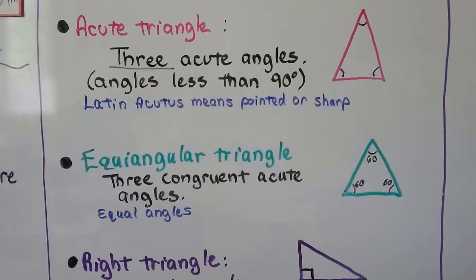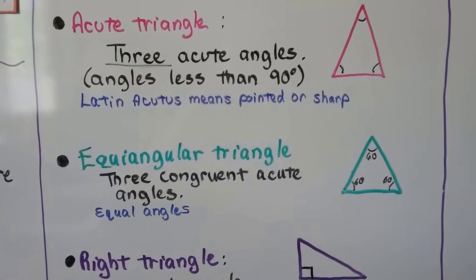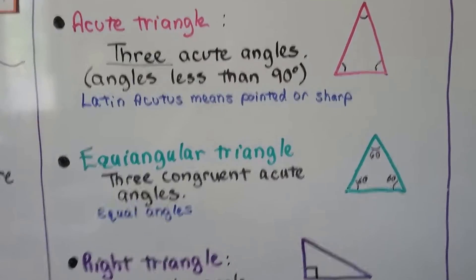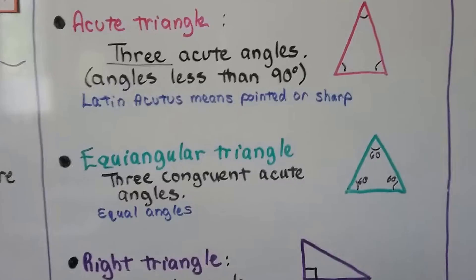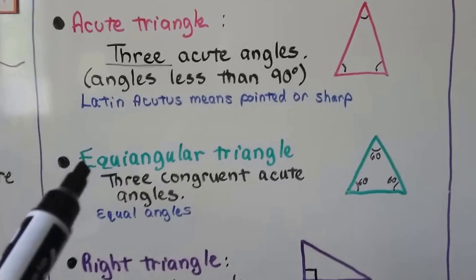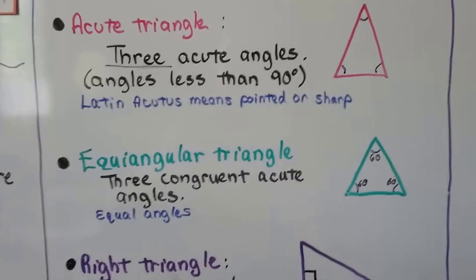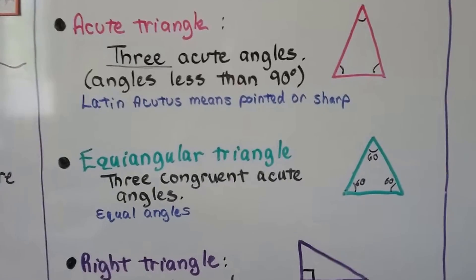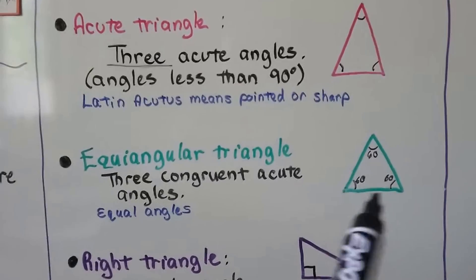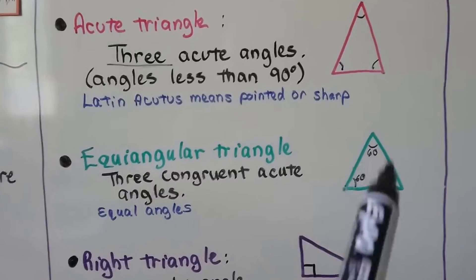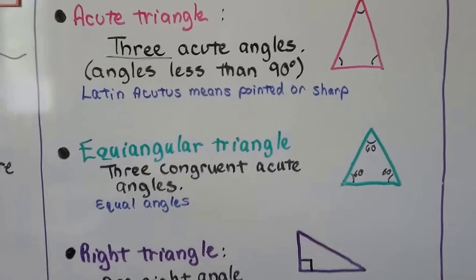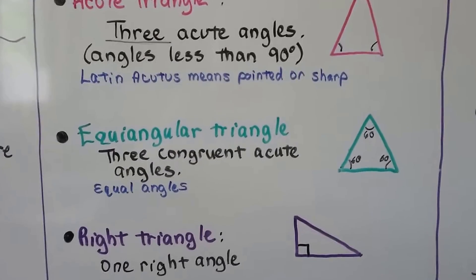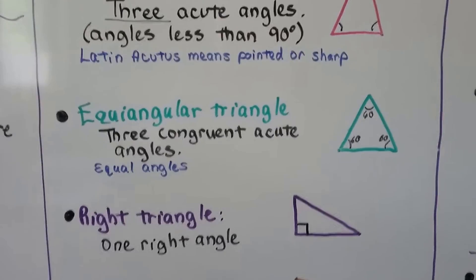An equiangular triangle has three congruent acute angles. You can look at the word equiangular and it kind of looks like equal angle. That means every single angle is the same measure — they're all 60 degrees, because the triangle has 180 degrees inside.